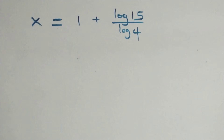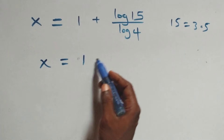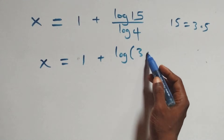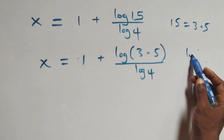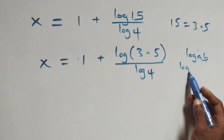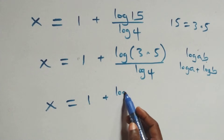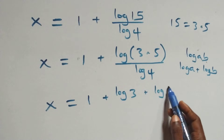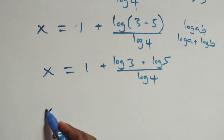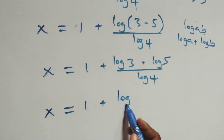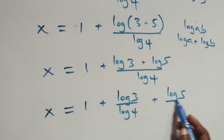Next step: 15 can be written as 3 times 5. This also follows the law of logarithm — log(a × b) is the same thing as log a plus log b. So x equals to 1 plus log 3 plus log 5 over log 4. Then we separate this into two fractions: x equals to 1 plus log 3 over log 4 plus log 5 over log 4.